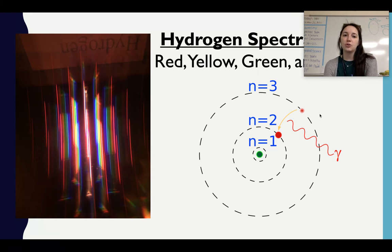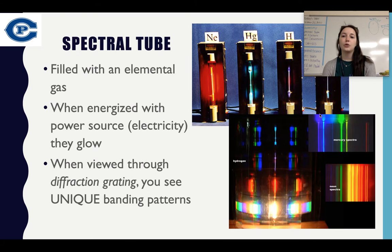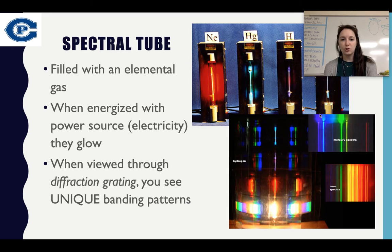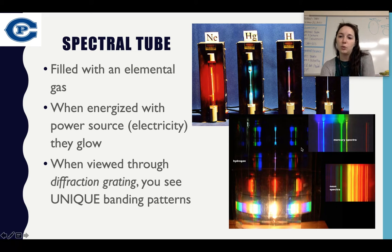The first thing you need to know is that different elements emit different spectra of light. For example, hydrogen has red, yellow, green, and violet. We can see those colors in the image when we have our diffraction grating glasses on. Spectral tubes are like a light bulb filled with an elemental gas — when energized with electricity, they glow. With my naked eye I can't really distinguish the colors clearly, but when viewed with diffraction grating, you see unique banding patterns.